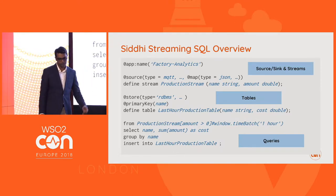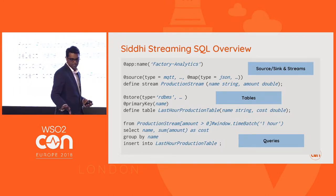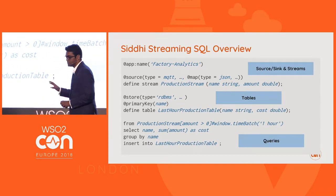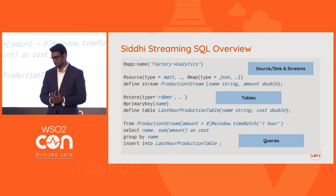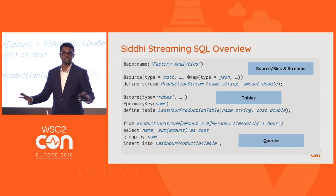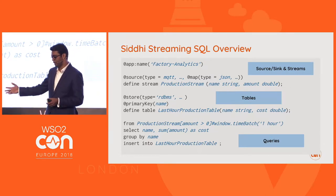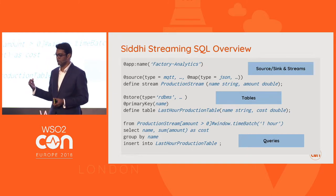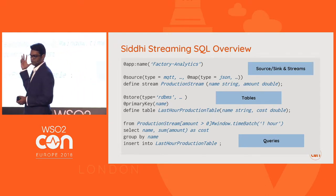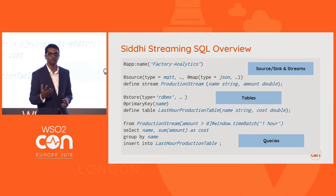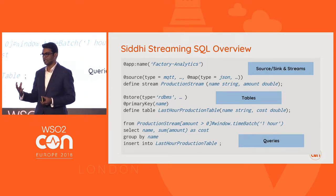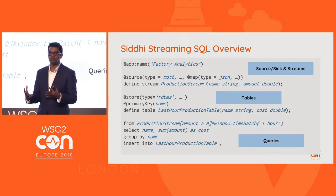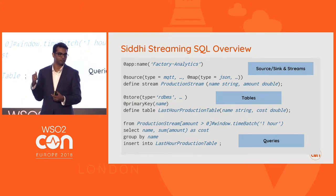This is the Siddhi language that we use. You define a streaming application, then define a stream — similar to defining a table. For example, a production stream has a name and an amount. That stream has a source annotation to get information from somewhere — here we consume events from MQTT with some configuration parameters, consuming a JSON mapping. If you use a standard format, it understands and processes it; otherwise, you provide hints about the custom JSON structure.